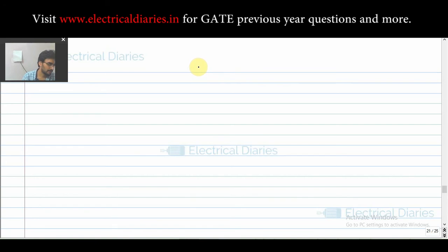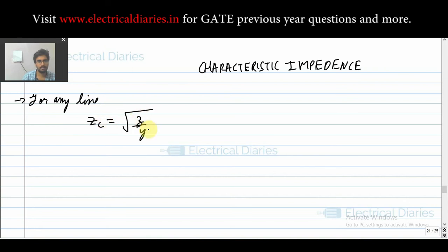Hello, good day to everyone. In this video we will see characteristic impedance. For any line, characteristic impedance is noted by Zc and is given by the square root of Z by Y, where Z is impedance per unit length.